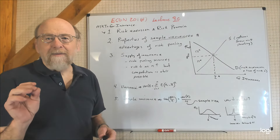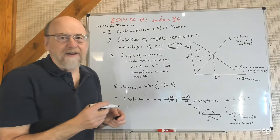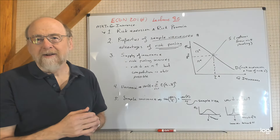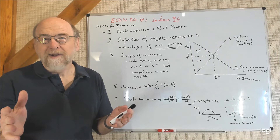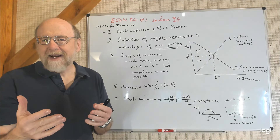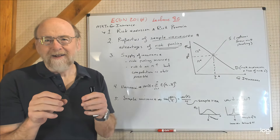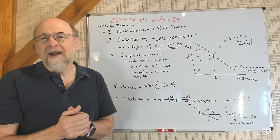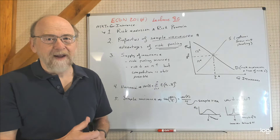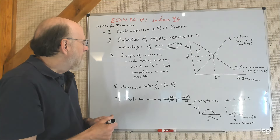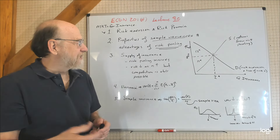The property of sample variances implies that there are advantages to risk pooling — sharing the risk, if you want. Some insurance companies are set up in the normal corporate way, providing risk pooling services, while others are organized as cooperatives and clubs with more formal risk-sharing arrangements. But basically, risk pooling works because of the properties of sample averages.